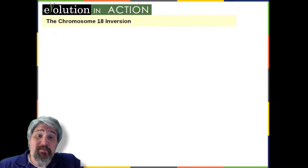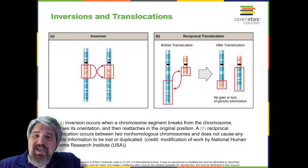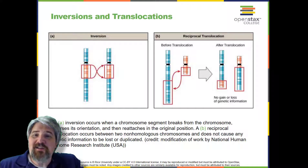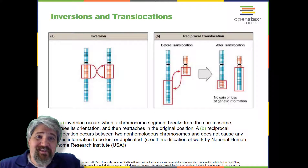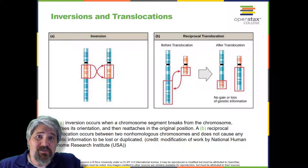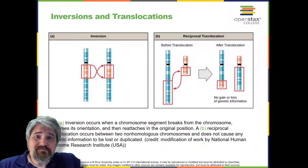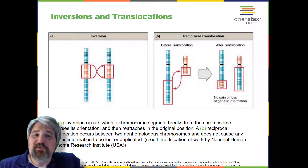A translocation occurs when a segment of a chromosome dissociates and reattaches to a different non-homologous chromosome. Translocations can be benign or have devastating effects, depending on how the position of genes is altered with respect to regulatory sequences. Notably, specific translocations have been associated with several cancers and with schizophrenia. Reciprocal translocations result from the exchange of chromosome segments between two non-homologous chromosomes, such that there is no gain or loss of genetic information.